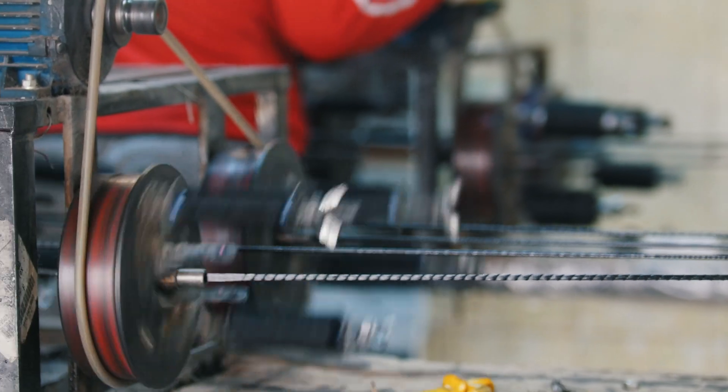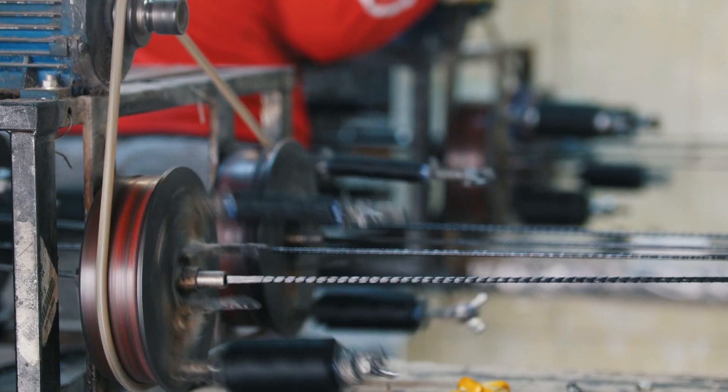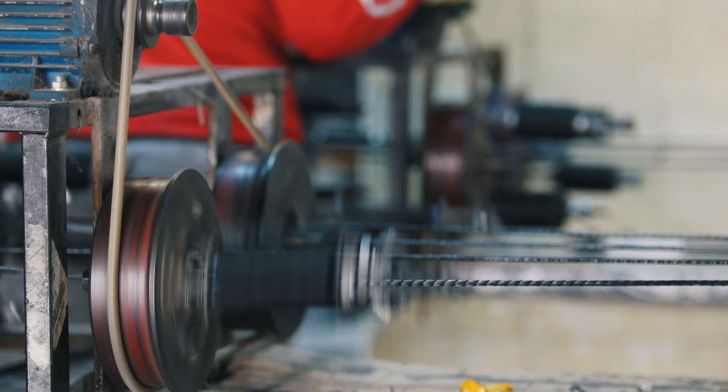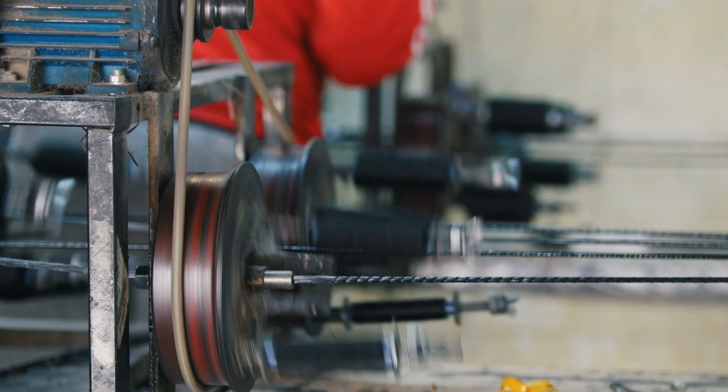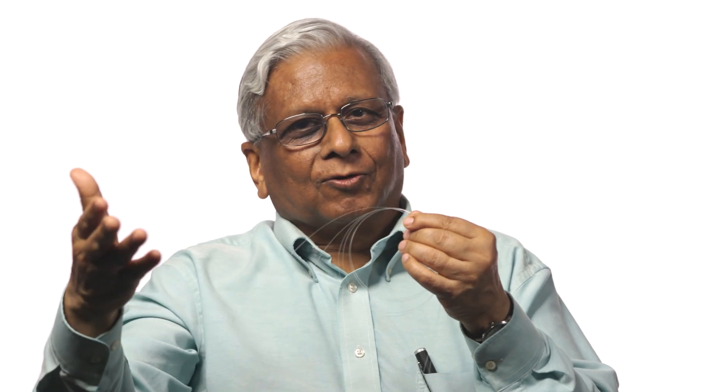The diameter of this glass is 0.1 millimeter. To make a cable, you have to put this fiber inside a cable, and you don't put only one fiber — you put five, six, or ten fibers inside the cable, because they will provide ten different paths to communicate.